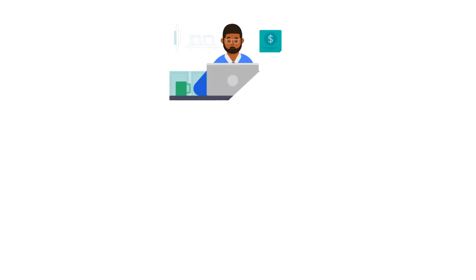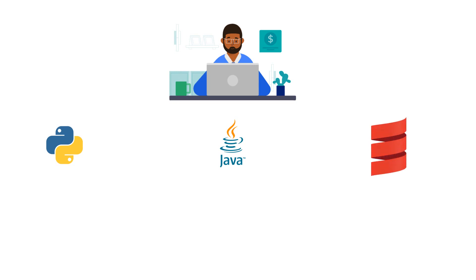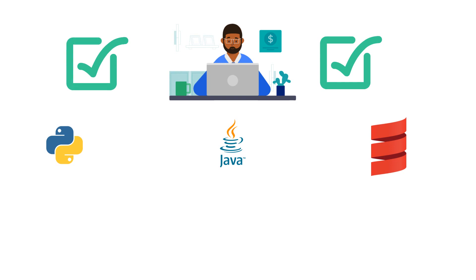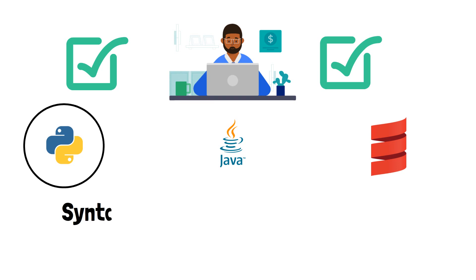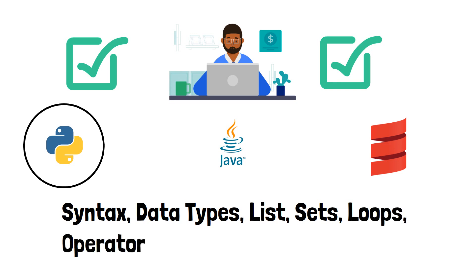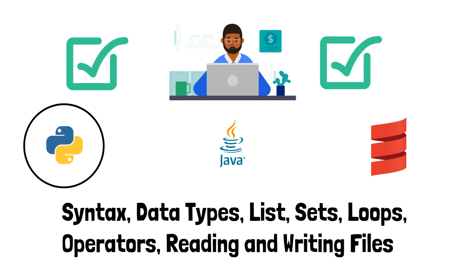Number one skill you need to learn is a programming language. As a data engineer you will be writing code to read, write, or transform data. The top three programming languages used by data engineers are Python, Java, and Scala. If you don't know any, start with Python — it's easy to learn and many companies are shifting to it because it supports many libraries and packages. Things you need to learn in Python include basic syntax, data types, lists, sets, loops, operators, and reading and writing files such as CSV, JSON, and Excel.